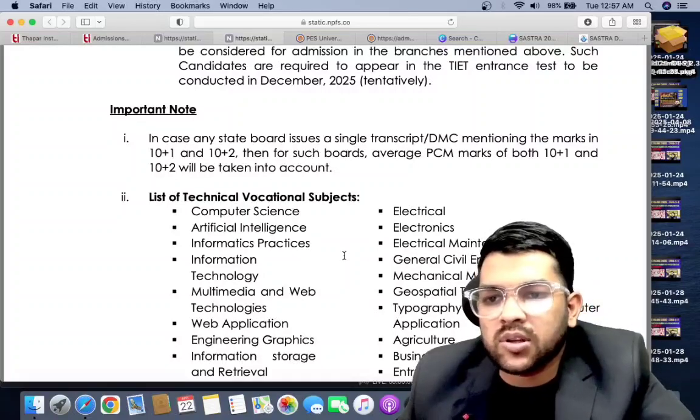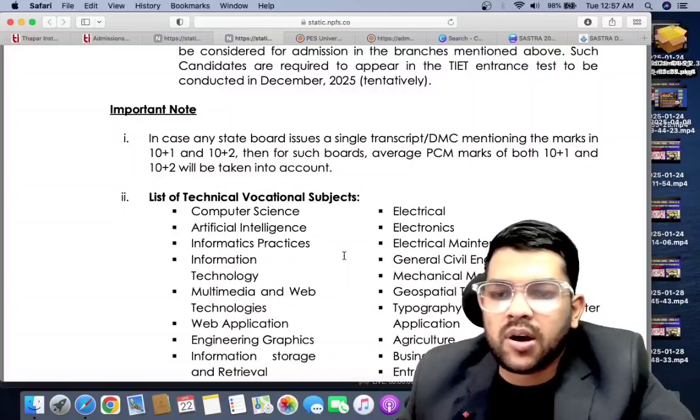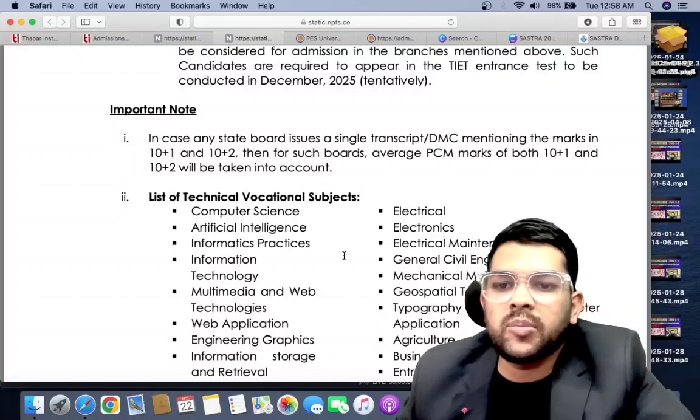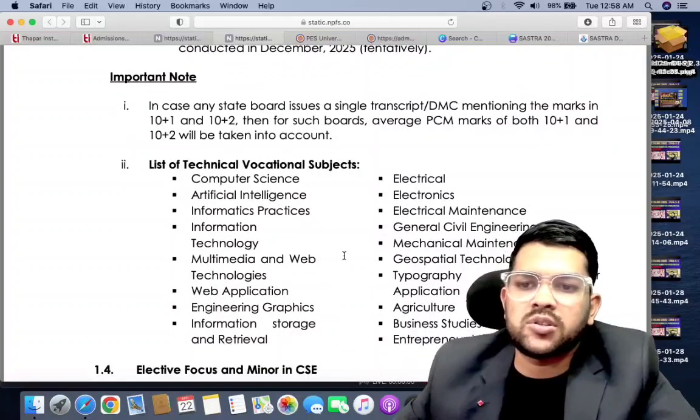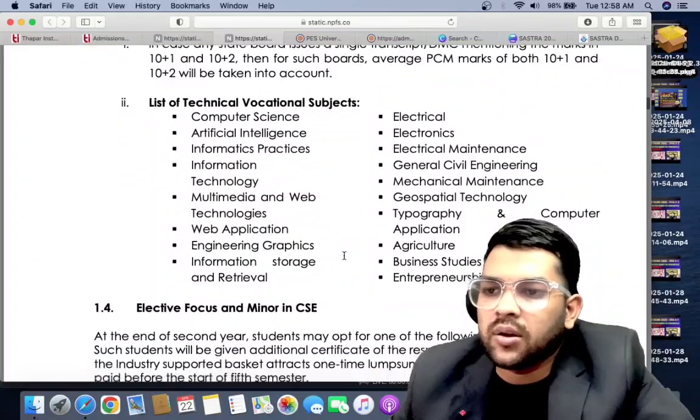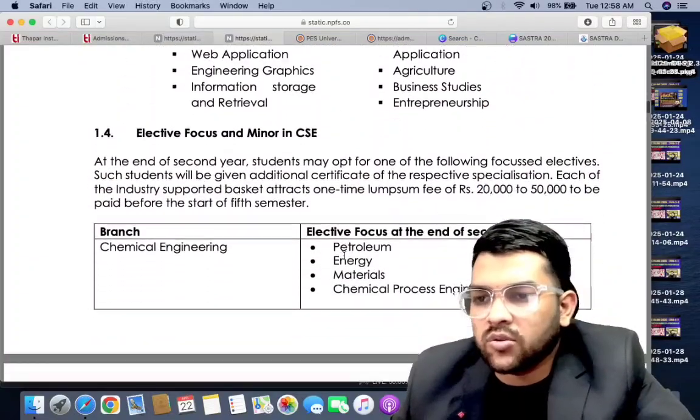In case any state board issues a single transcript/DMC mentioning the marks in 10+1 and 10+2, then such boards - average PCM marks for both 10+1 and 10+2 will be taken. In some South Indian states they provide 11th and 12th both on the single paper, that is the result.